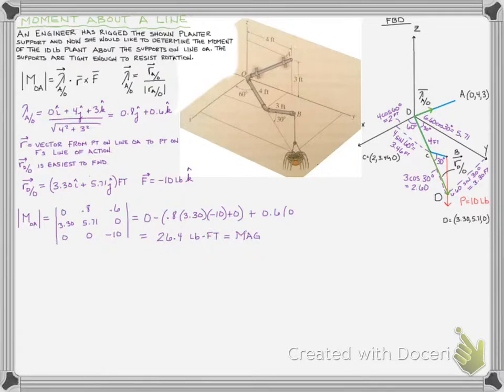But if we wanted to know the moment as a vector, its vector components, so we knew how much of this moment is about the X, how much is about the Y, and how much about the Z, then remember, all we have to do is take the actual magnitude and multiply it by the unit position vector of the line. So we just take our lambda we already found, and we multiply it by our magnitude.